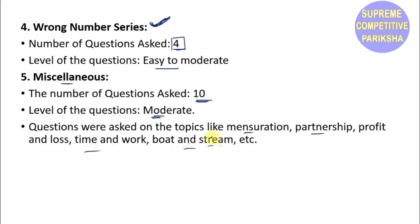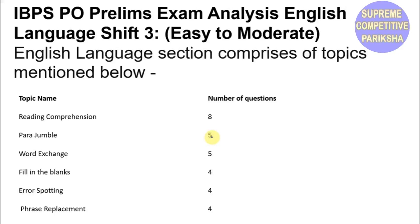Now let's look at the English section. Reading Comprehension was asked for 8 marks, Para Jumble for 5 marks, Word Exchange for 5 marks, Fill in the Blanks for 4 marks, Error Spotting for 4 marks, and Phrase Replacement for 5 marks. This is the type of English section that came in Shift 4.